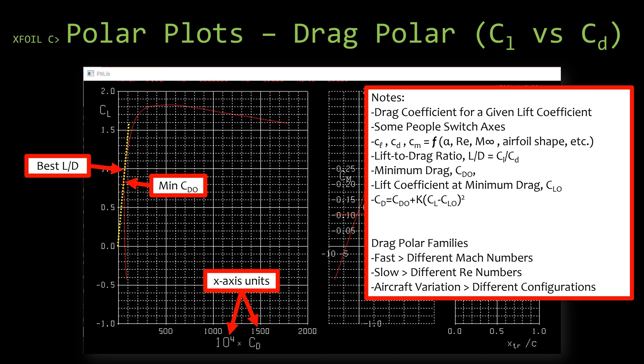All right, so let's take a quick look at the drag polar, which would be the coefficient of lift versus the coefficient of drag. This plot is usually used when you know a lift coefficient and you're trying to find out the corresponding drag. Now because of this, some people mistakenly think that the coefficient of lift is actually the independent variable and they'll be adamant about switching the axes so that the coefficient of lift is the x-axis and the coefficient of drag would be the y-axis. That's not entirely accurate.